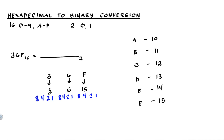3 is the sum of 2 and 1, so those positions are 1's. We don't use 8 and 4, so those are 0's. So 3 is equivalent to 0, 0, 1, 1 in binary.